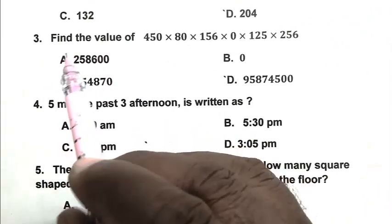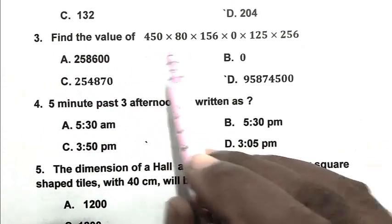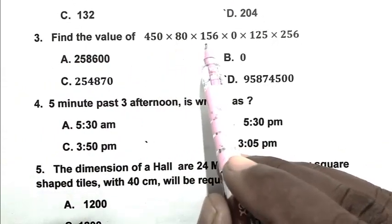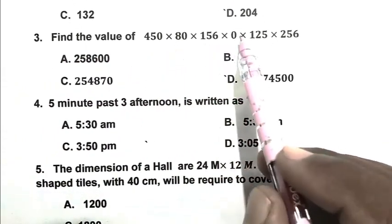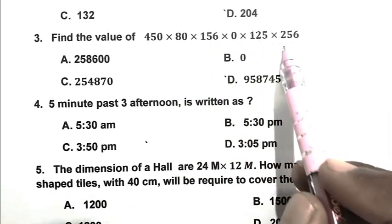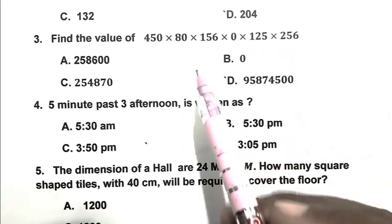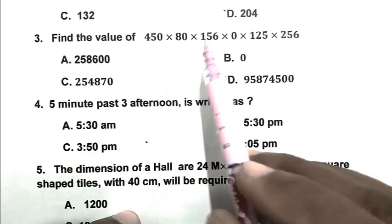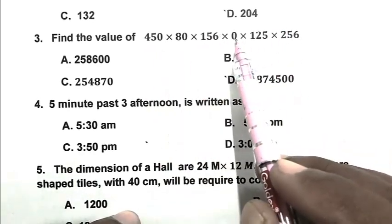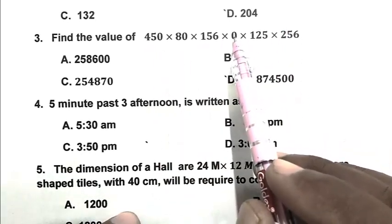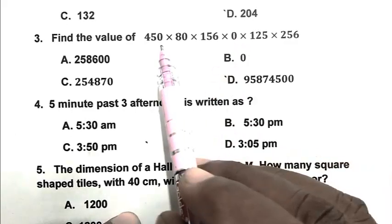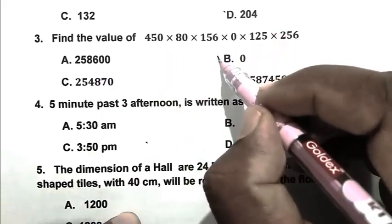Question number three: Find the value of 450 × 80 × 156 × 0 × 125 × 256. Here, if we closely watch the expression, we find there is a 0, and if we multiply 0 with any number, we get 0. So B is the right answer.